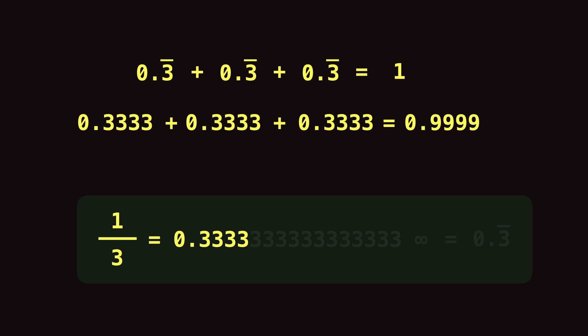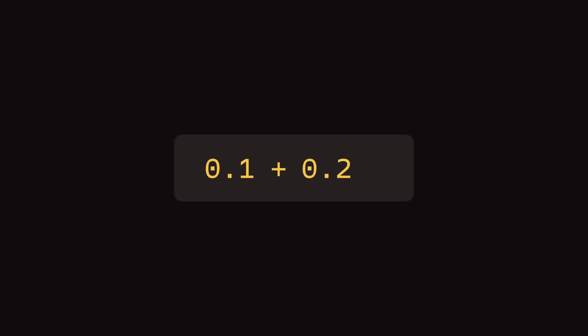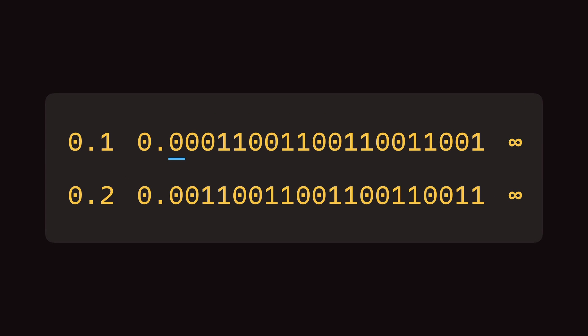So it means that if we don't take all the numbers after the decimal place, the result is going to be different from what we expect. Something similar happens when the computer tries to deal with floating point numbers. If we look at 0.1 plus 0.2 again and take the binary format for both numbers — because computers deal with binary — 0.1 in binary is 0.000110011... all the way to infinity, and 0.2 is 0.00110011... all the way to infinity.